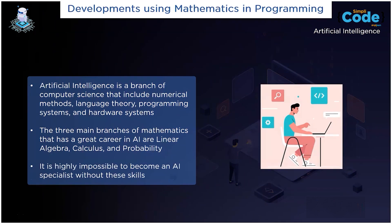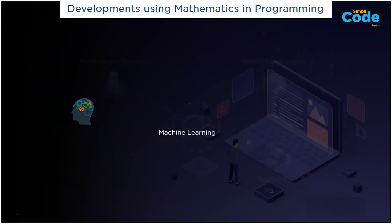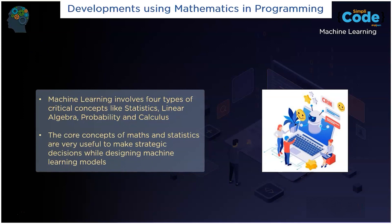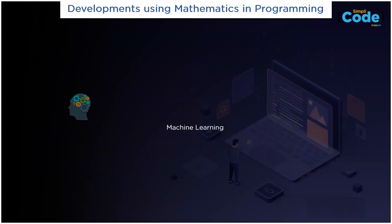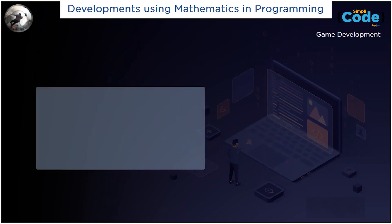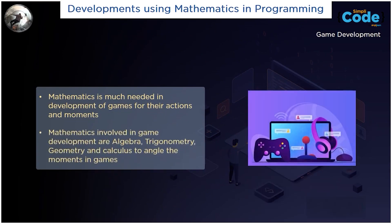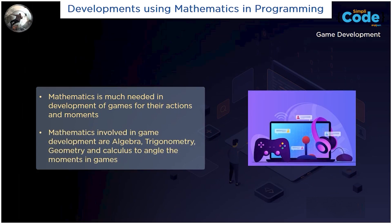The next one on the list is machine learning. Mathematics is needed in the development of games for their actions and movements. The mathematics involved in game development are algebra, trigonometry, geometry, and calculus to angle the movements in games.